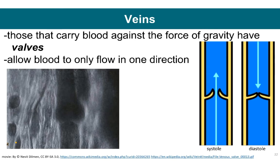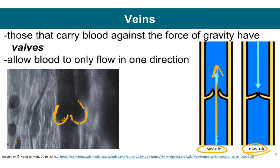Veins that carry blood against the force of gravity have structures called valves in them. The job of a valve is to allow blood to flow in only a single direction. Systole is the contractile phase of a heartbeat or cardiac cycle — when the heart beats, blood is forced up past the cusps or leaflets of the vein. In diastole, the resting phase of the heartbeat, that blood falls back down. Because of the way these valves are built, it automatically closes, and that prevents blood from flowing backwards.